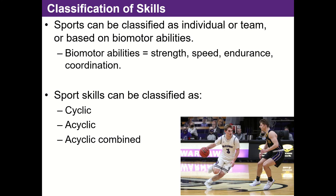One of the terms this book uses a lot is biomotor abilities. Biomotor abilities are the parameters of performance — things like strength, muscular power, speed, muscular endurance, cardiovascular endurance, coordination, and agility. Coordination here means things like agility but also the ability to perform the technical skills of the sport. Generally when we're talking about those, we focus on muscular strength, power, speed, muscular endurance, cardiovascular endurance, and agility — those are the big ones we'll hone in on.